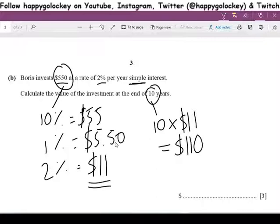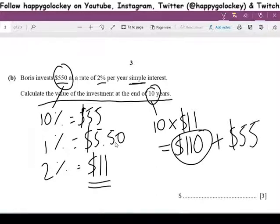And the question says, calculate the value of the investment at the end of 10 years. So from 550, we now add the 110 to the 550, and that gives us $660. So the answer is $660.